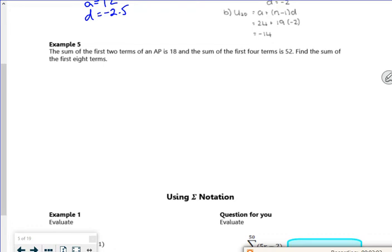Right then. So the next bit says the sum of the first two terms is 18. So I know that S₂ is 18 when n is 2. And I know that the sum of the first four terms is 52. So S₄ is 52 when n is 4.